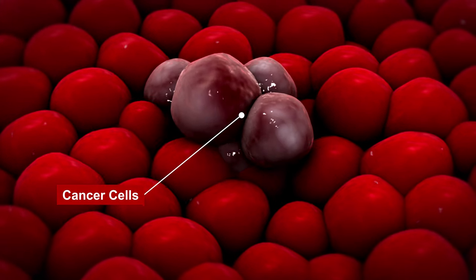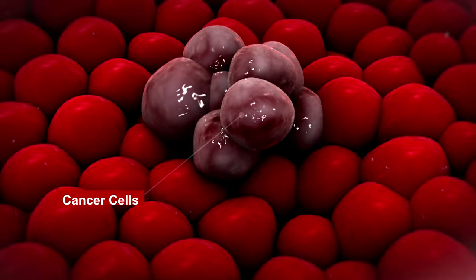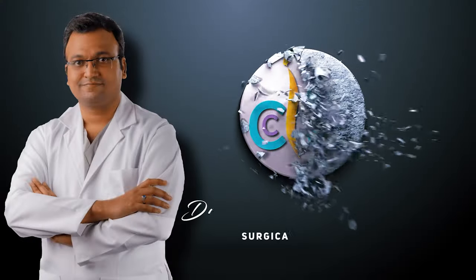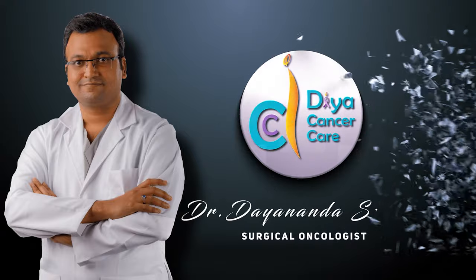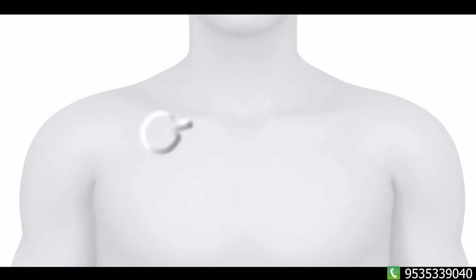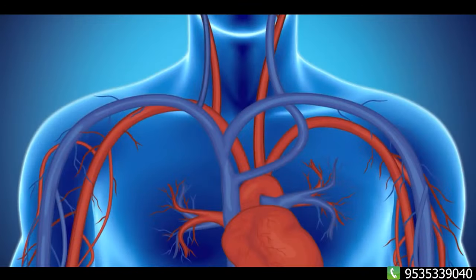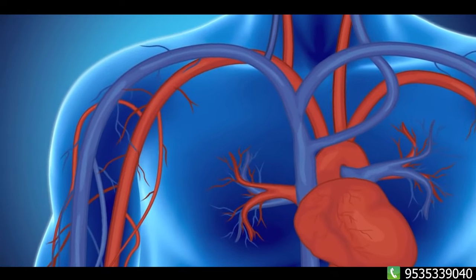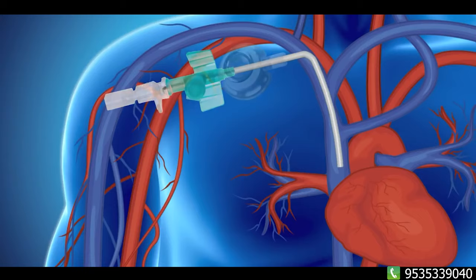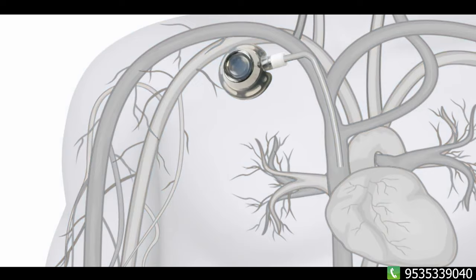Let's talk about the chemo port. The chemo port is a button shape. There are two parts: one is a drug chamber, and one is a catheter. In a small surgery, this catheter is placed into a vein. The drug chamber is fixed in the skin.